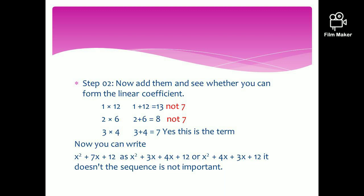Now add those factor pairs and see whether you can obtain the coefficient of the linear term — here that is 7. The first pair: 1 times 12, and 1 plus 12 equals 13, which is not 7. The second pair: 2 times 6, and 2 plus 6 equals 8, which is not 7. The third pair: 3 times 4, and 3 plus 4 equals 7 — exactly matching the coefficient of the linear term. Therefore, you can split 7x into the form 3x plus 4x.